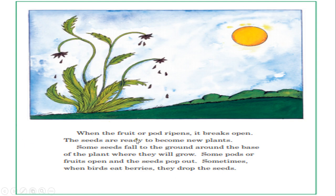When the fruit or pod ripens — meaning it reaches a rich and mature age — it breaks open and the seeds are ready to become new plants. Some seeds fall to the ground around the base of the plant and grow another plant. Some pods or fruits open and the seeds pop out.